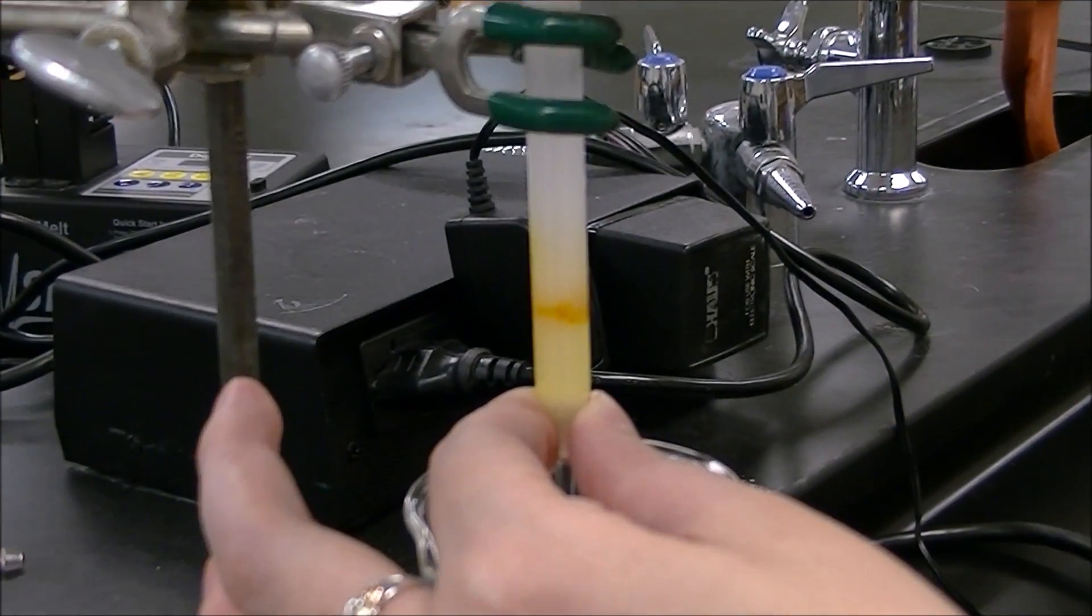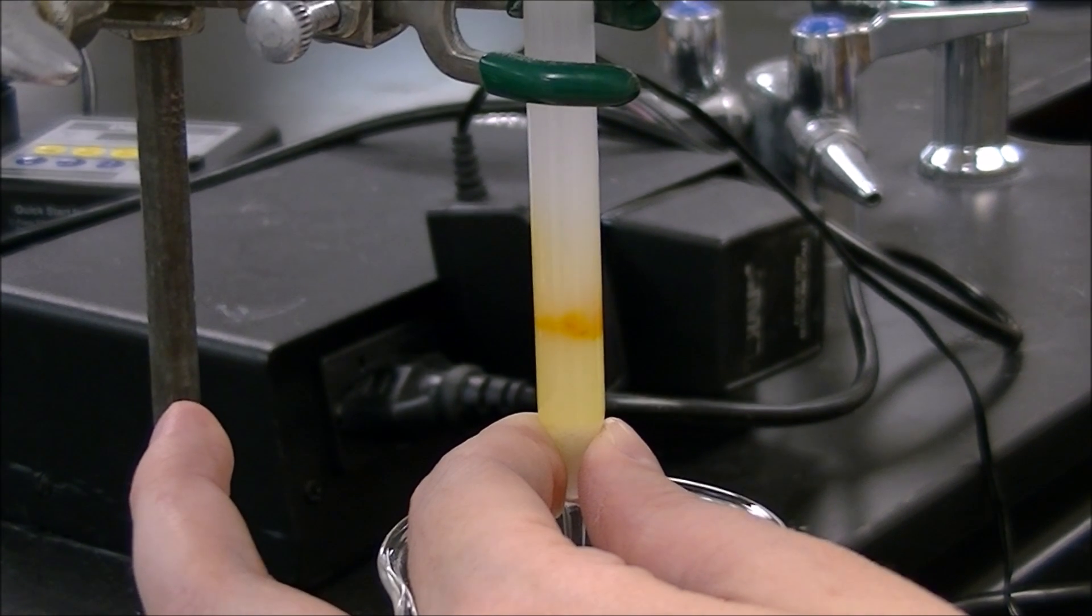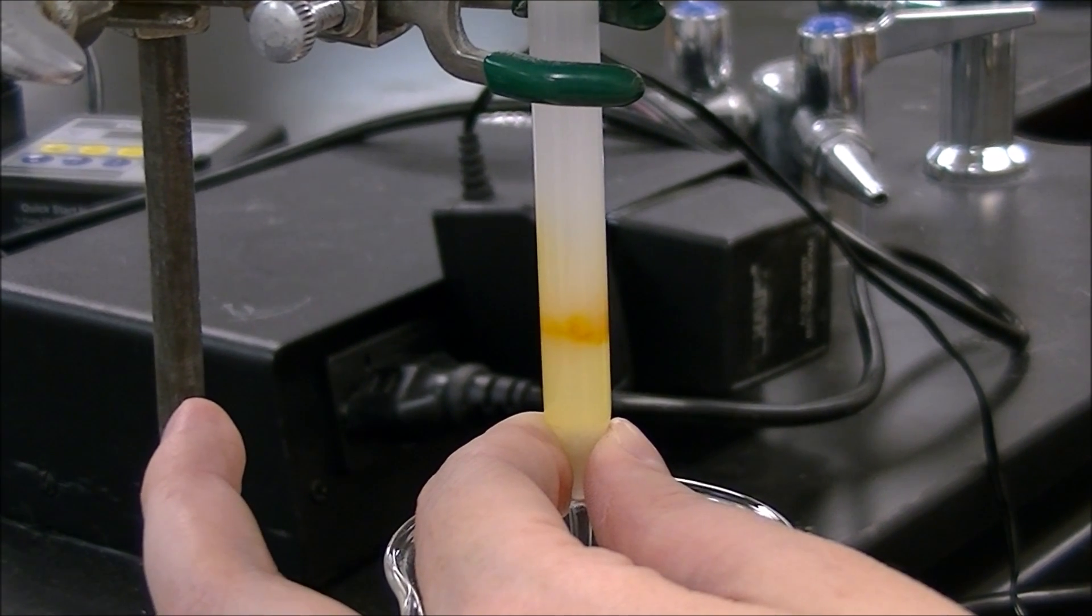Column chromatography is a purification technique that leverages differences in polarity to separate components of a mixture. In this experiment we'll be using the cis and trans isomers of azobenzene.